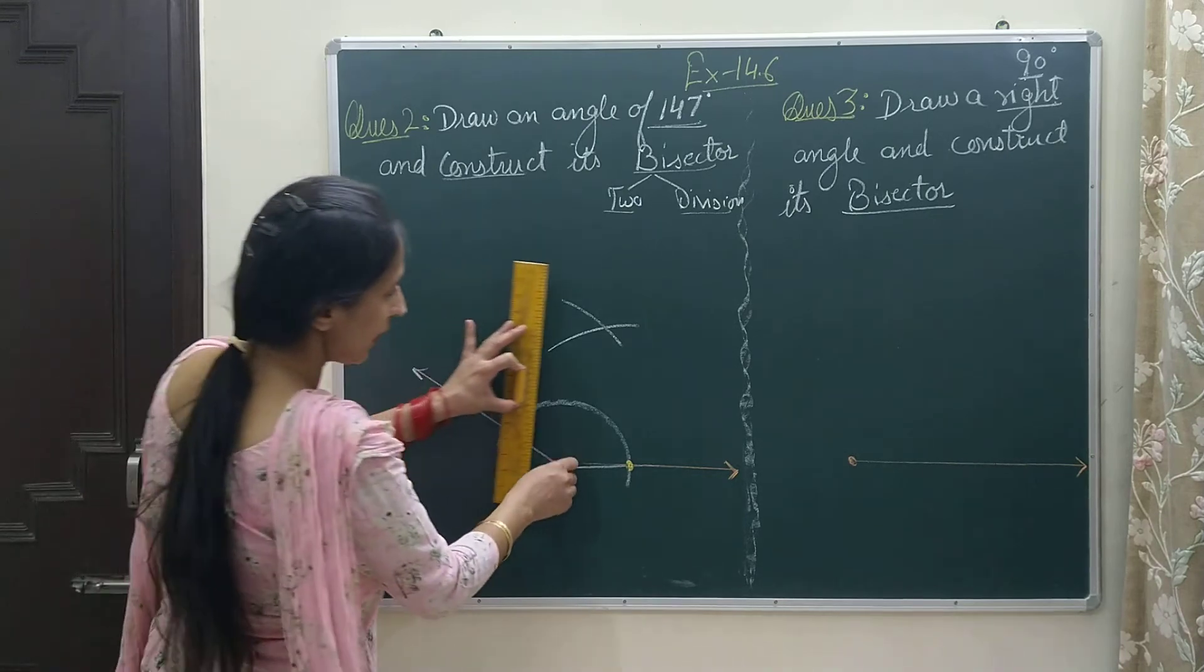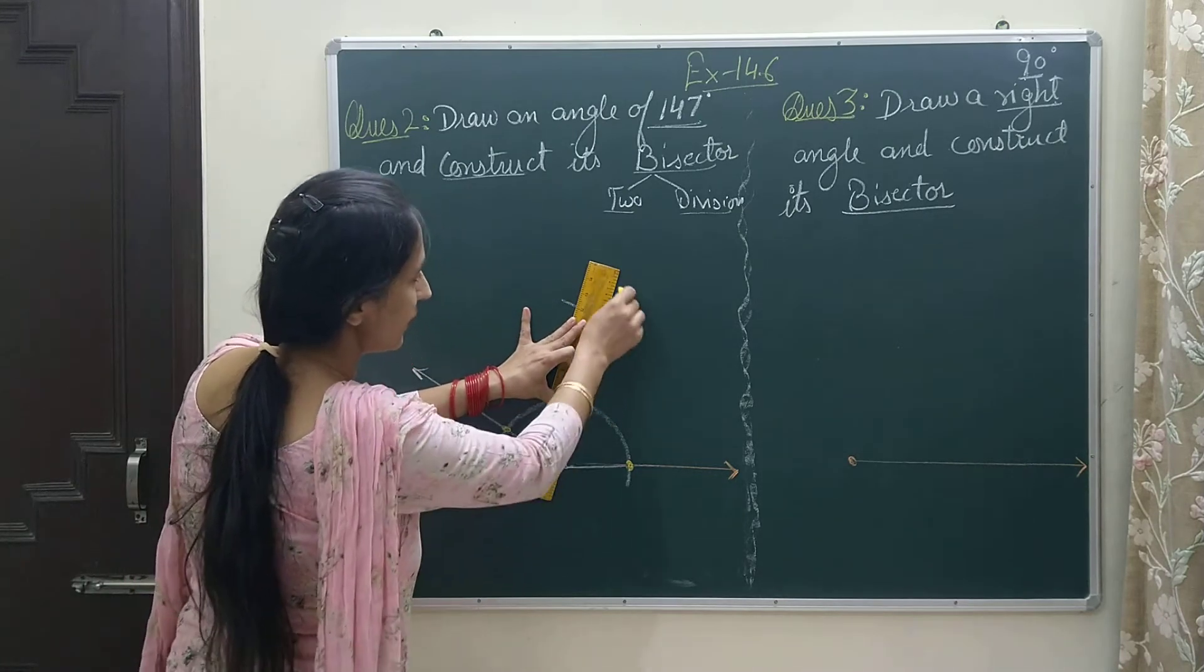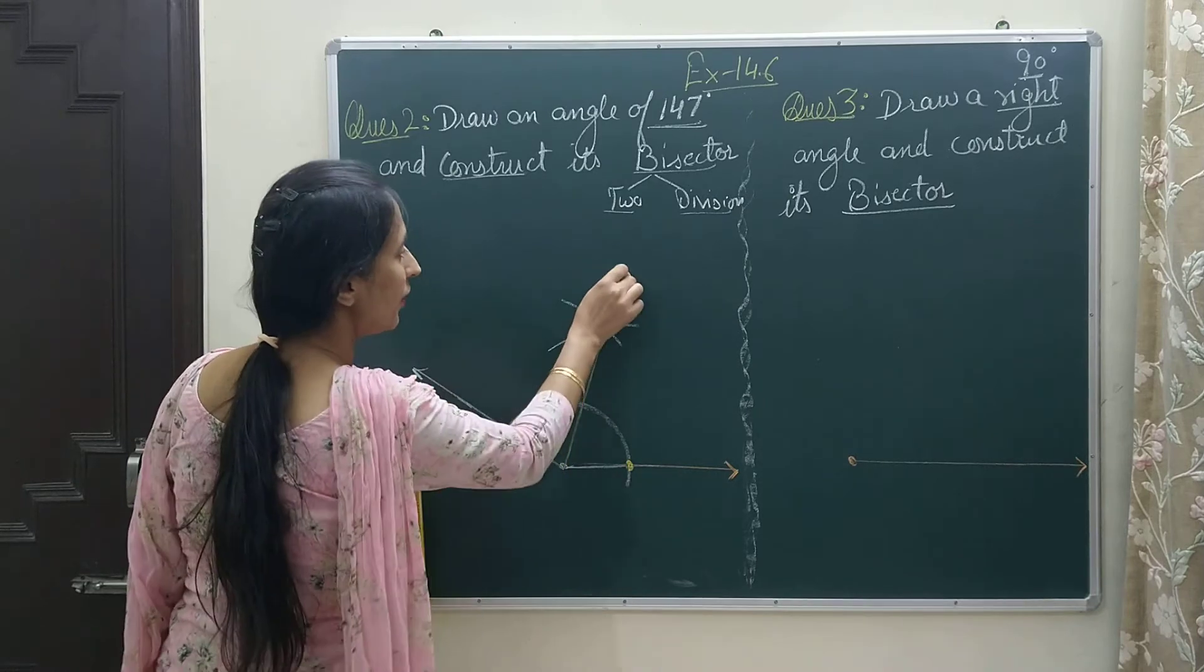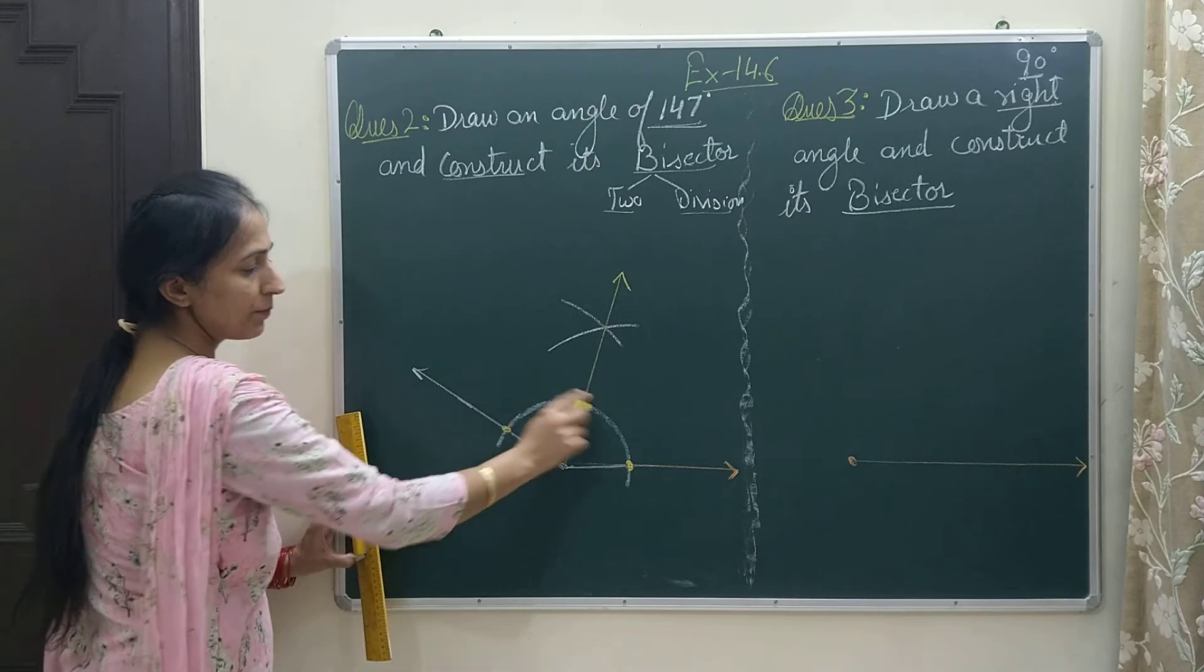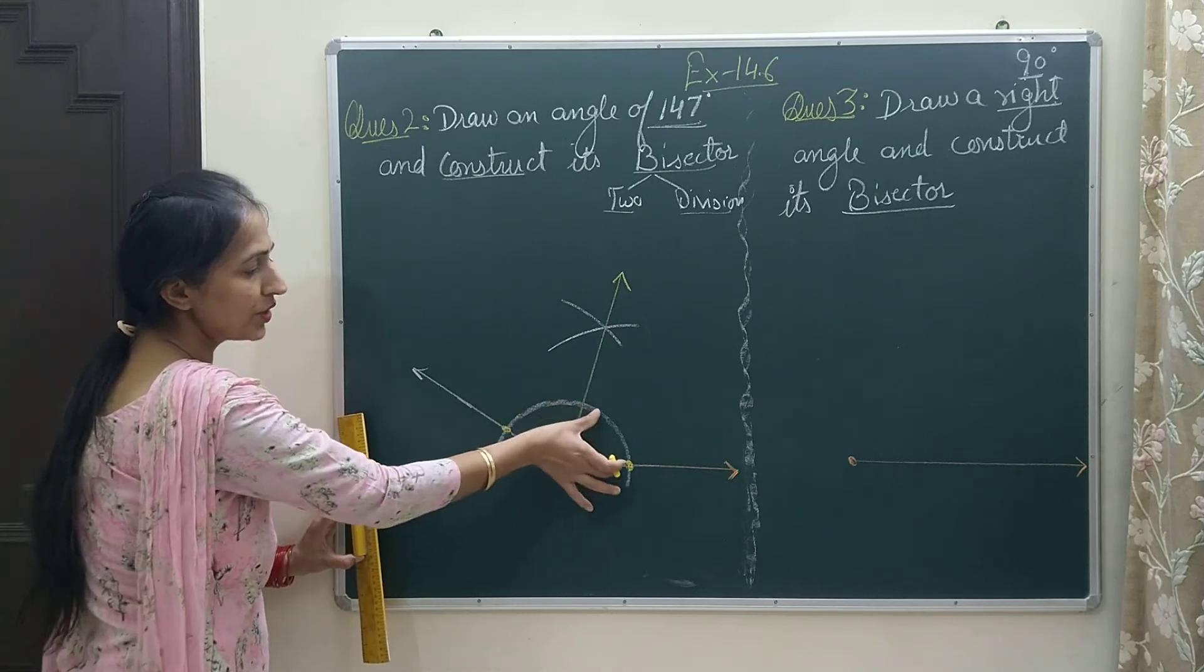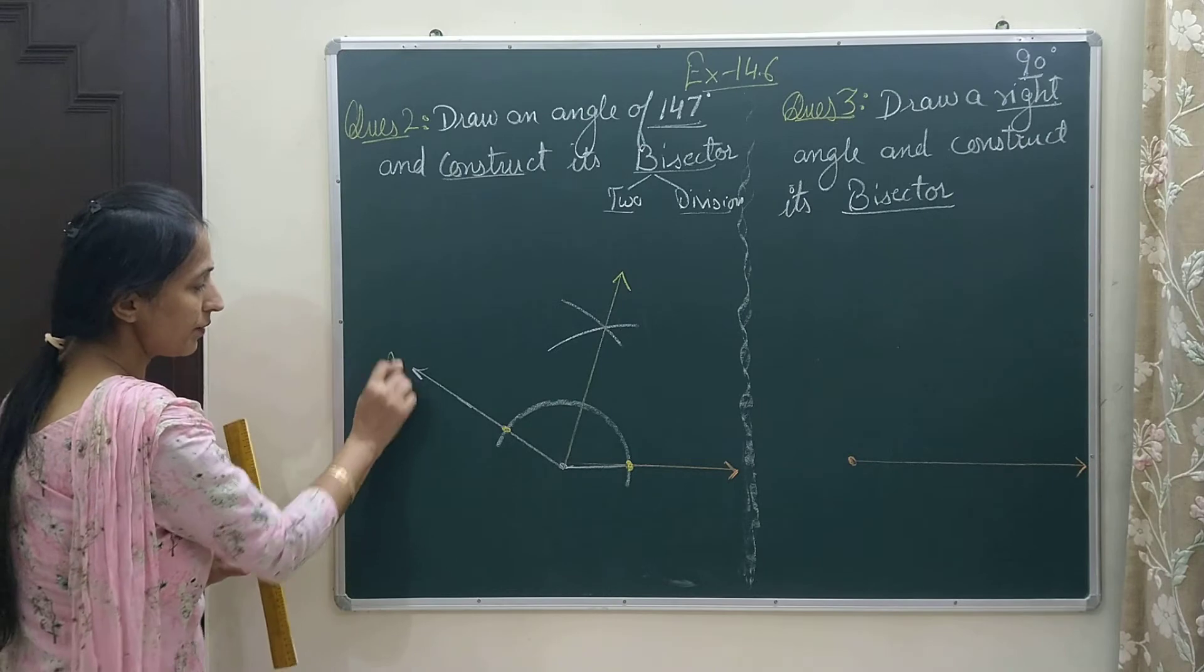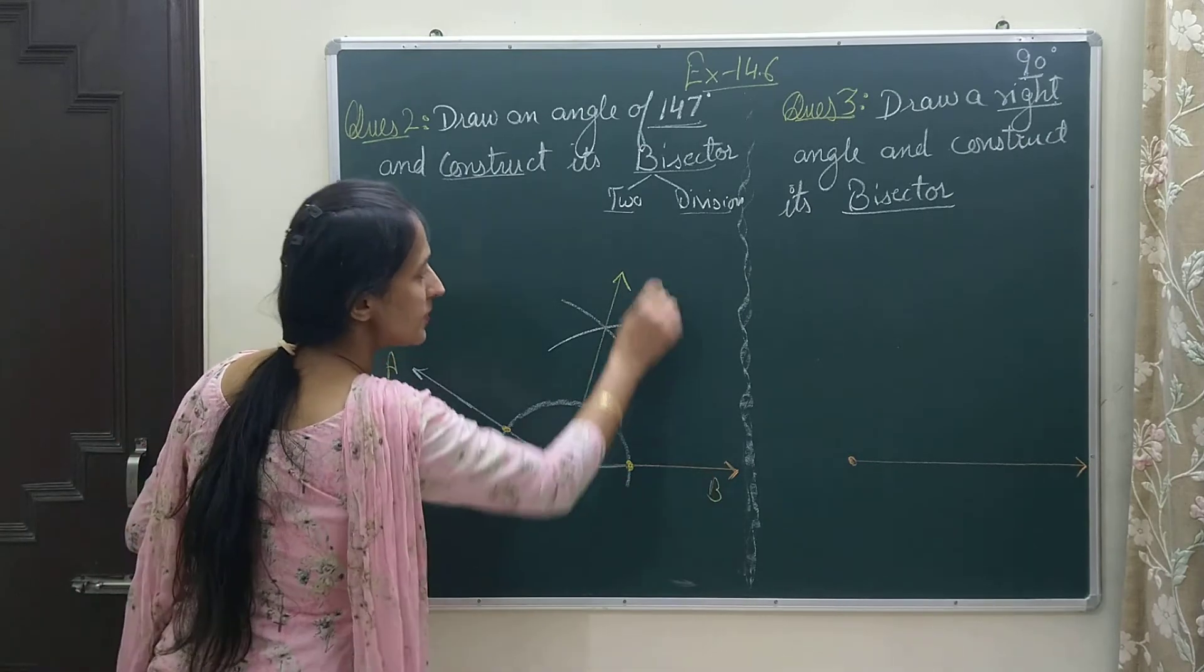Where these two arcs cut each other, that point I will join with the vertex, and here I have got the bisector for this complete angle. This complete angle is divided into two equal parts now.